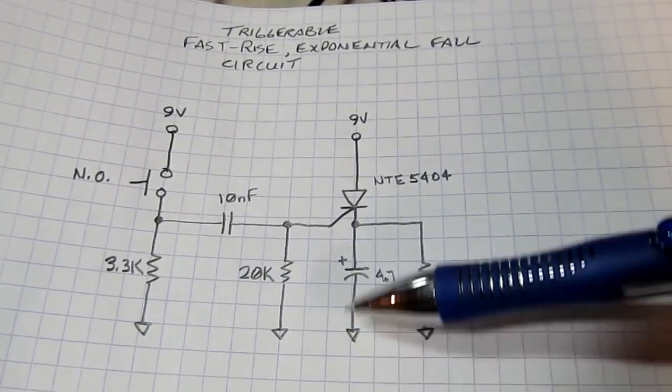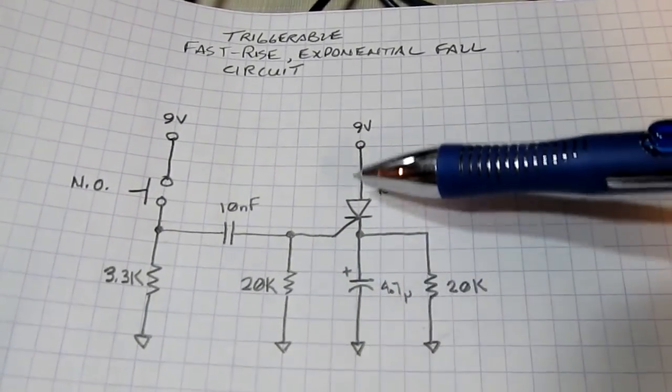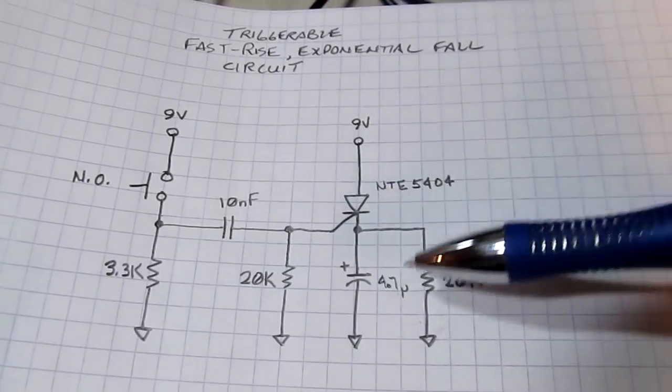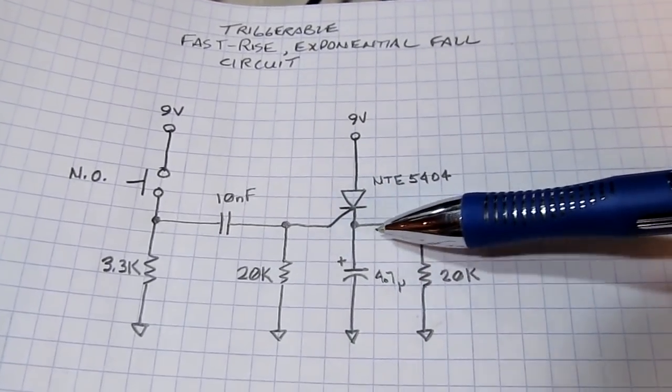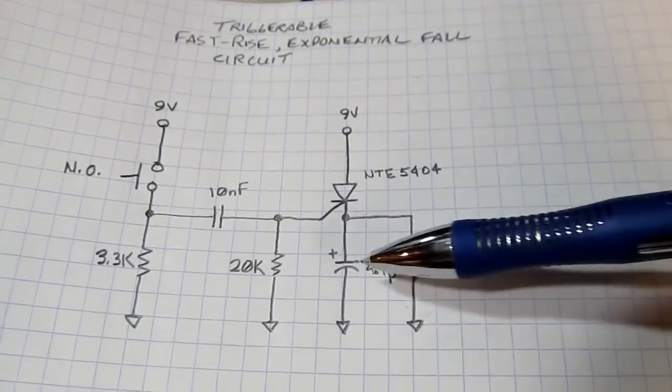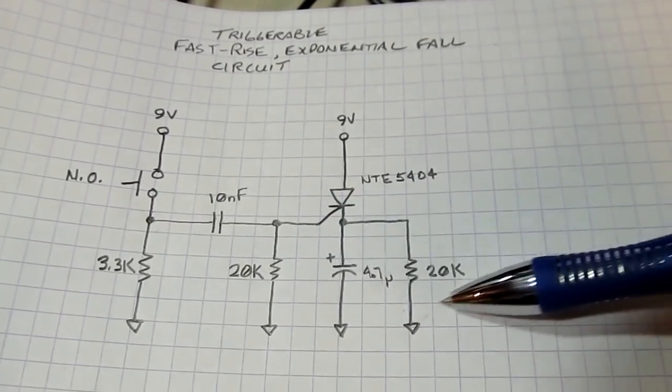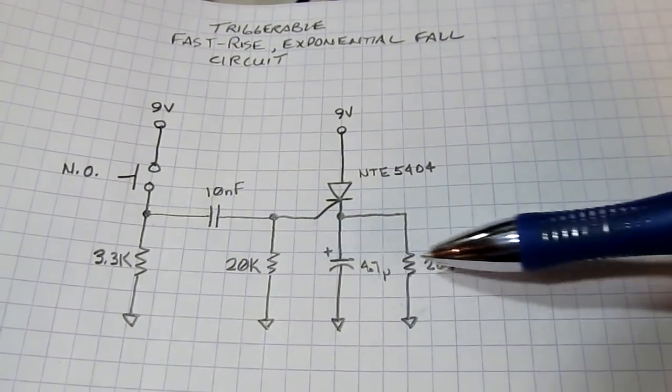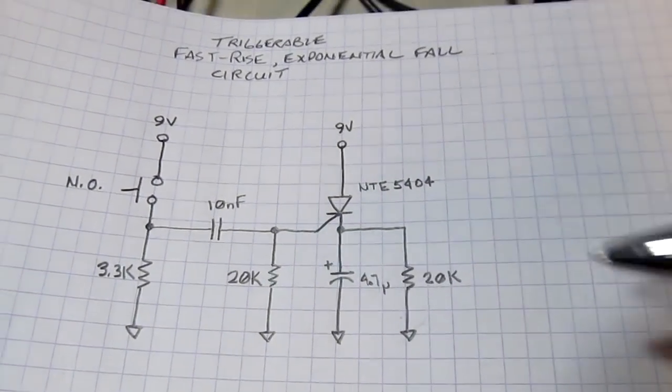So now we've got that fast rise, but as soon as we're done charging, this device turns off, and now the capacitor will discharge through this resistor so that the exponential decay is really just a function of this RC time constant. So let's go take a quick look at how it works.